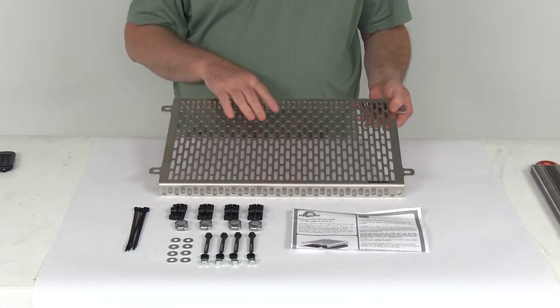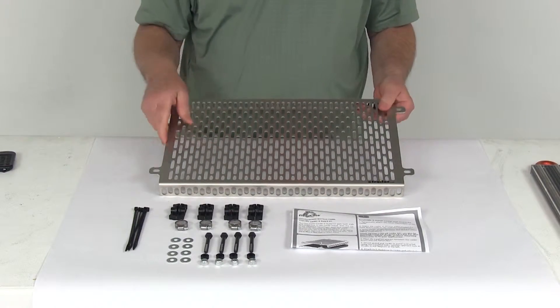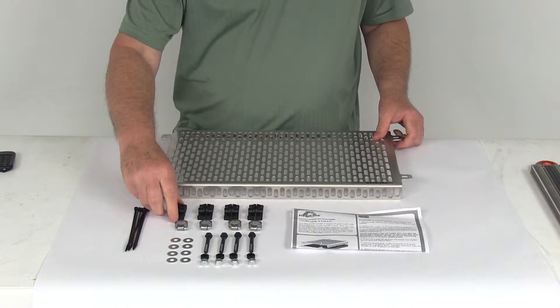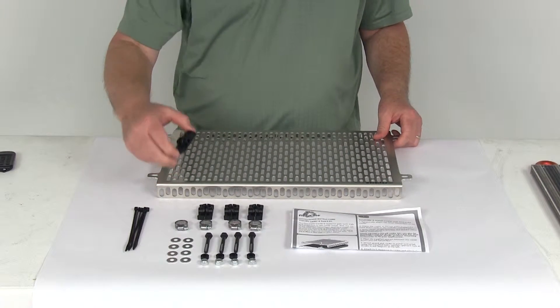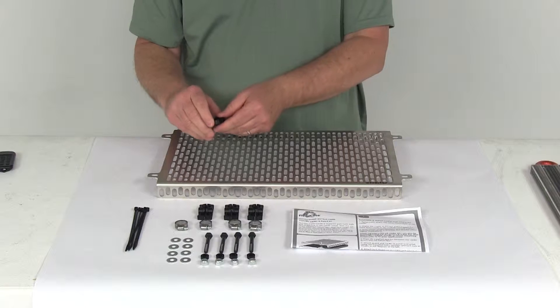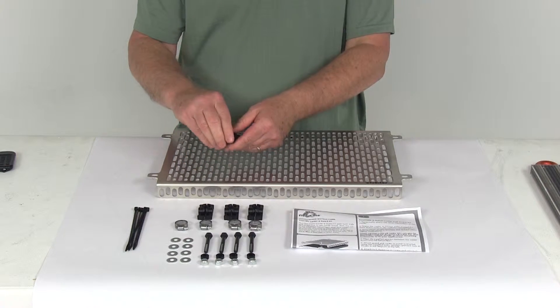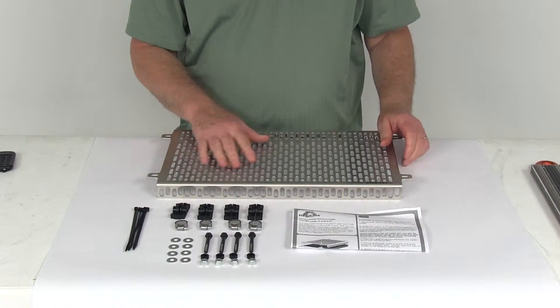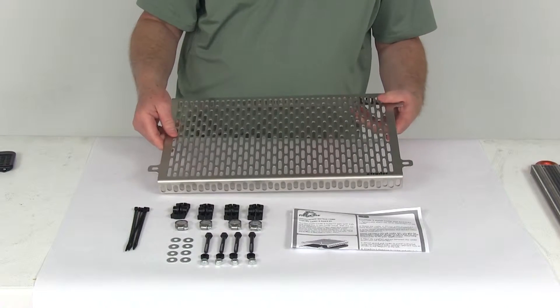This part includes everything shown here on the table: the aluminum cooler guard itself and these gator clips, which are used to mount the guard to the cooler. When you install them with the mounting hardware, it will give you an air gap between the guard and the cooler to help with cooling.